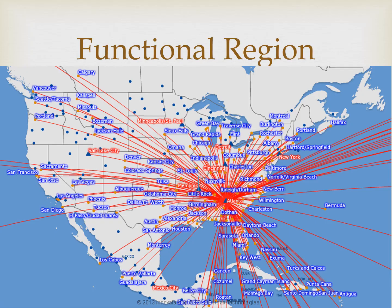Another example would be an airline with a hub. The hub is the node and the functional region is all of the destinations they fly to from that hub. For example, the primary hub for Delta Airlines is Atlanta.